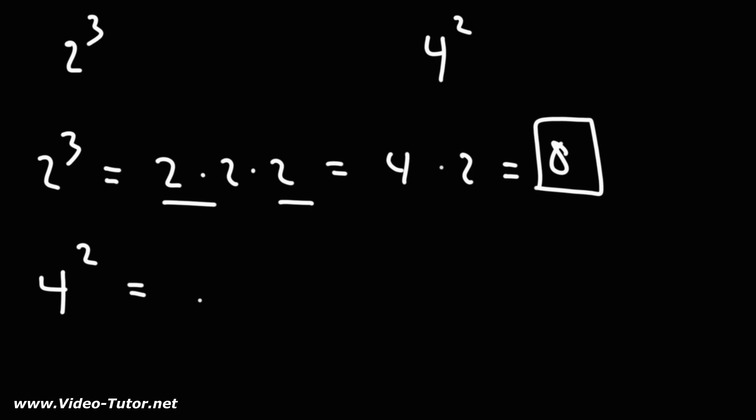4 squared means that we have two 4's multiplied to each other. 4 times 4 is 16. So just as multiplication represents repeated addition, exponents or exponentiation represent repeated multiplication.